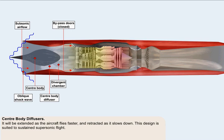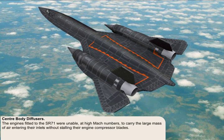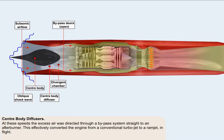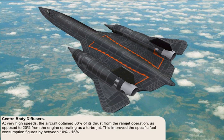This design is suited to sustained supersonic flight and was used on the SR-71 Blackbird aircraft. The Pratt & Whitney J-58 engines fitted to the SR-71 were unable at high Mach numbers to carry the large mass of air entering their inlets without stalling their engine compressor blades. At these speeds the excess air was directed through a bypass system straight to an afterburner. This effectively converted the engine from a conventional turbojet to a ramjet in flight. At very high speeds the aircraft obtained 80% of its thrust from the ramjet operation as opposed to 20% from the engine operating as a turbojet. This improved the specific fuel consumption figures by between 10% and 15%.